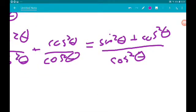Sin squared plus cos squared is 1. So that's 1 over cos squared, which is sec squared. Bonus proof.